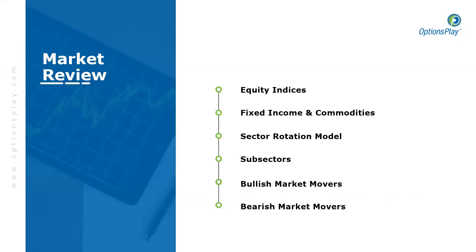Our agenda for today: kicking off as usual with the major indices. We have the S&P 500 now at all-time highs, so we'll take a look at where price could potentially pull back to. From there, moving on to fixed income and commodities, we'll take a look at the sector rotational model as well, highlighting which sectors are outperforming and underperforming the broader markets. We'll also look at a few sub-sectors of interest, ending with some bullish and bearish market observations from the previous week.